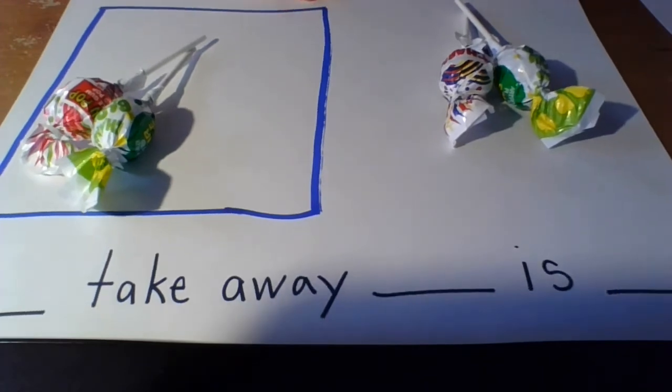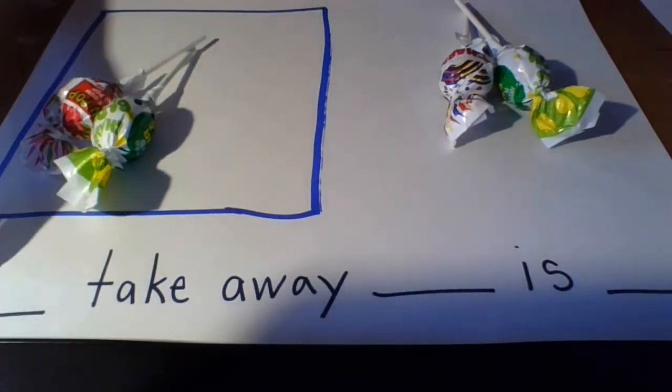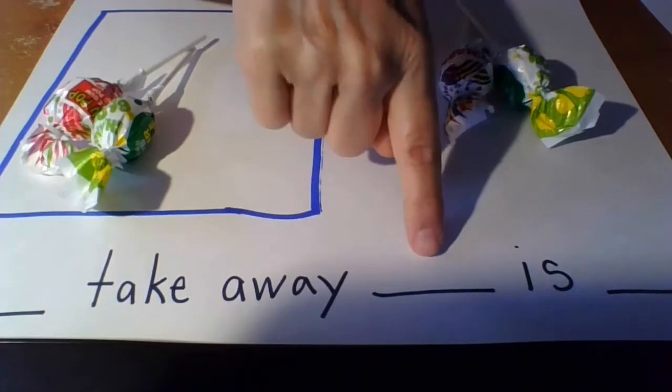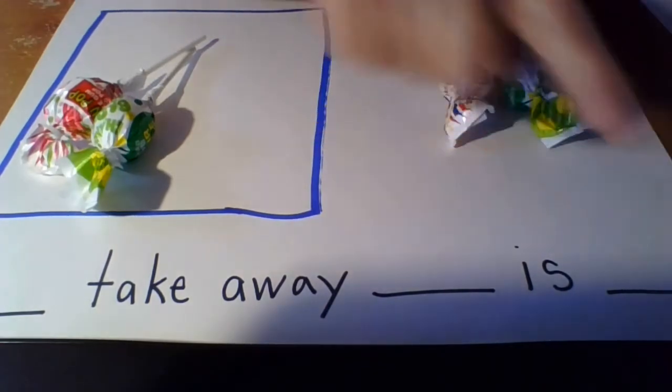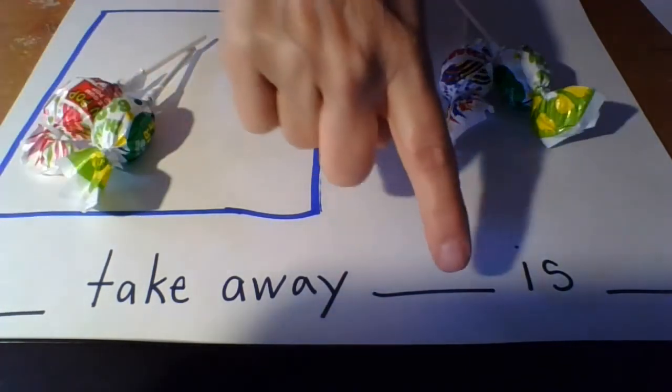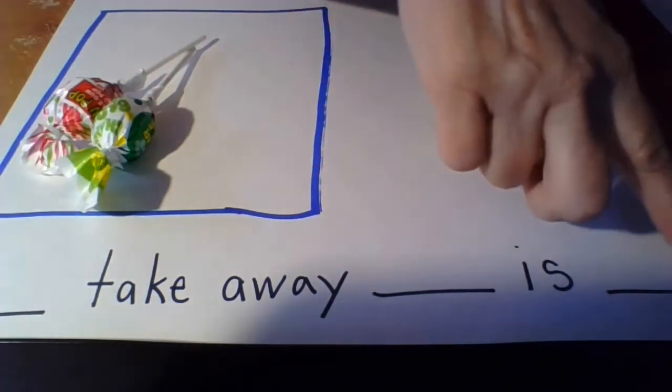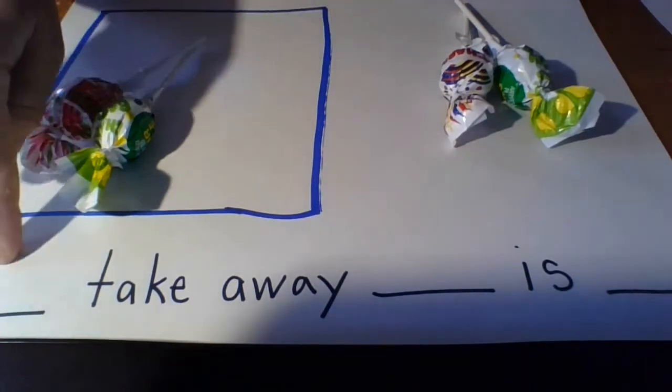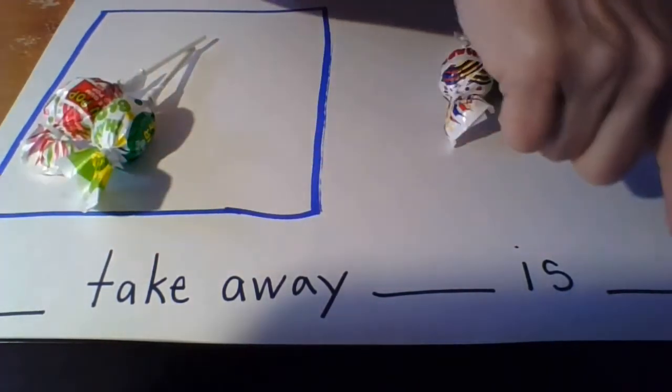I know how many I started with: four. Take away two is two. I showed how many we started with, how many were being removed, and how many are left. Four take away two is two.